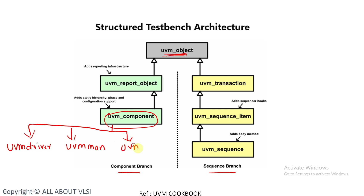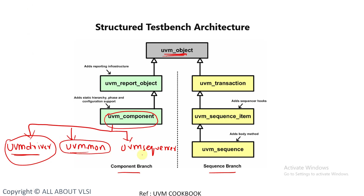Further derived classes include uvm_sequencer, uvm_scoreboard, and others. If a user wants to create a user-defined driver class, they must derive their class from uvm_driver. To create a monitor class, they must extend their class from uvm_monitor. To create a user-defined sequencer class, they extend it from uvm_sequencer. The user extends classes from these parent classes to utilize the built-in functions already available in the UVM parent classes.